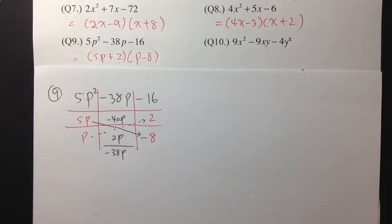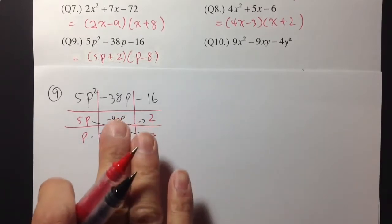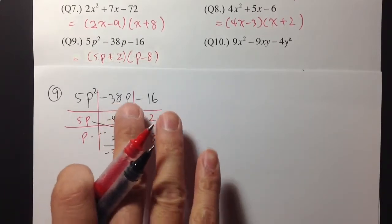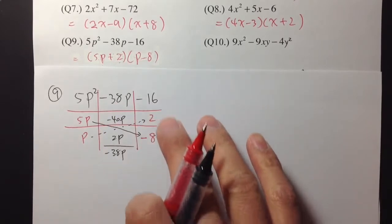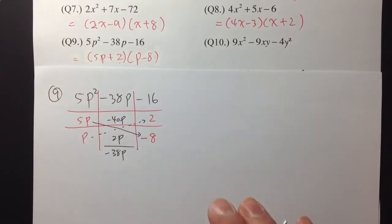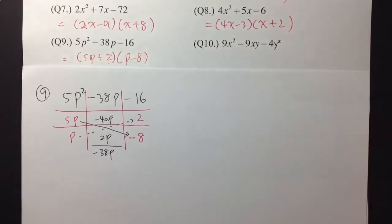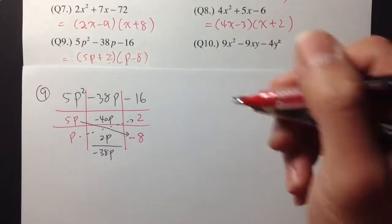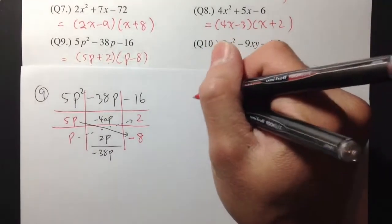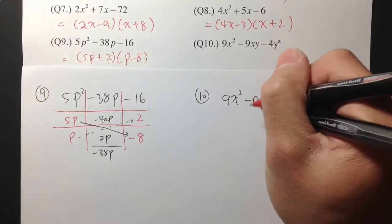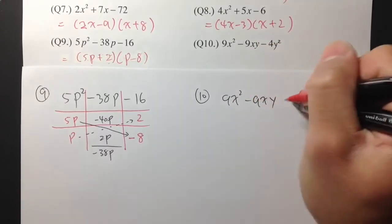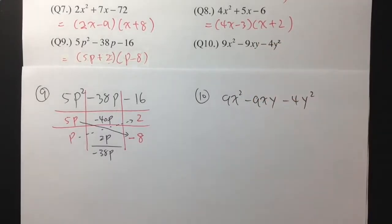So we can actually just look at what we need to produce in the middle before we put down some random numbers. Number 10: 9x squared minus 9xy minus 4y squared.